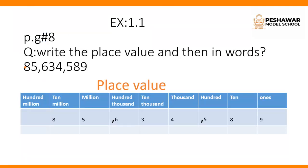Now these are clear to you. We are going to start our exercise. Open your books at page number eight — you have Exercise 1.1. At page number eight, you have a question: write the place value and then in words.